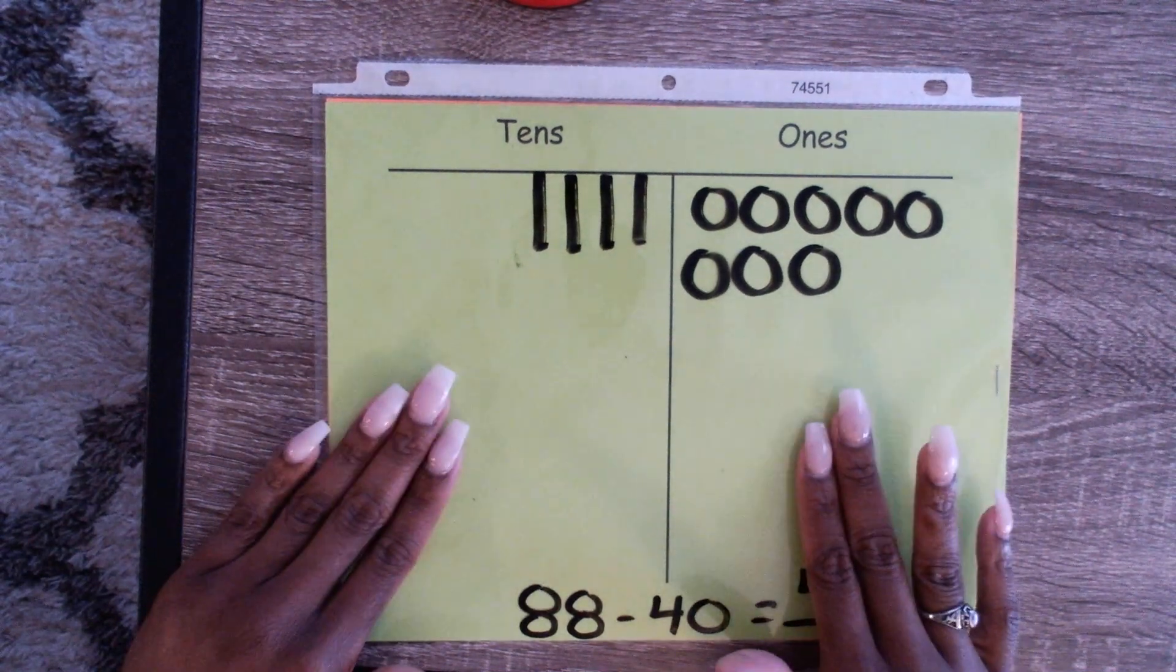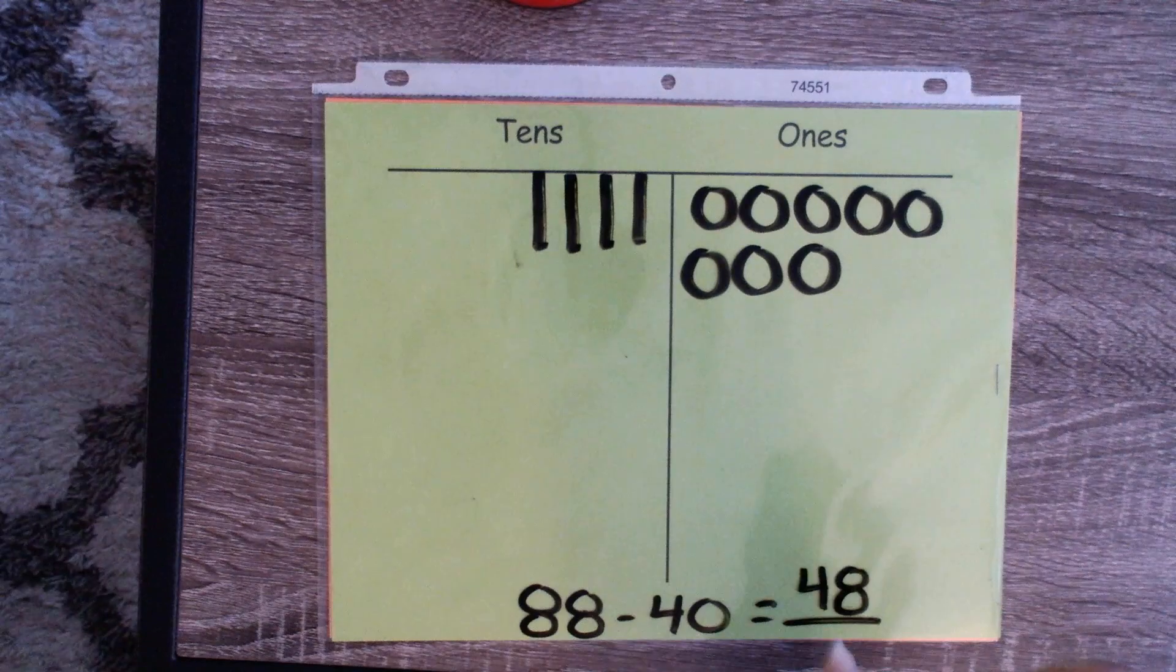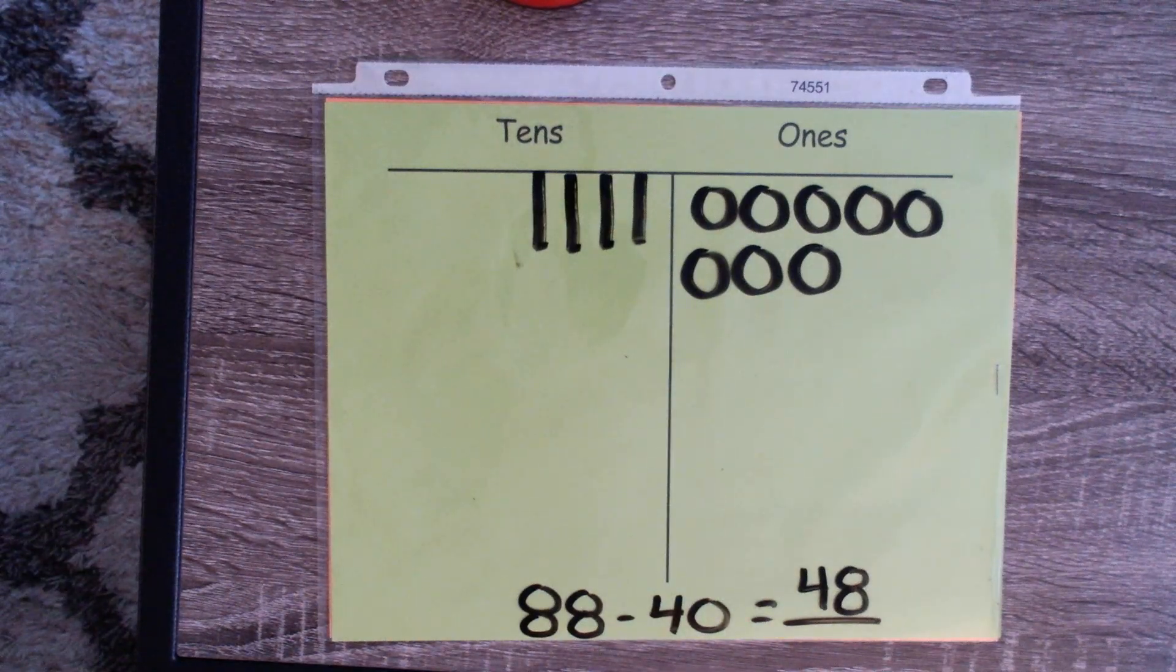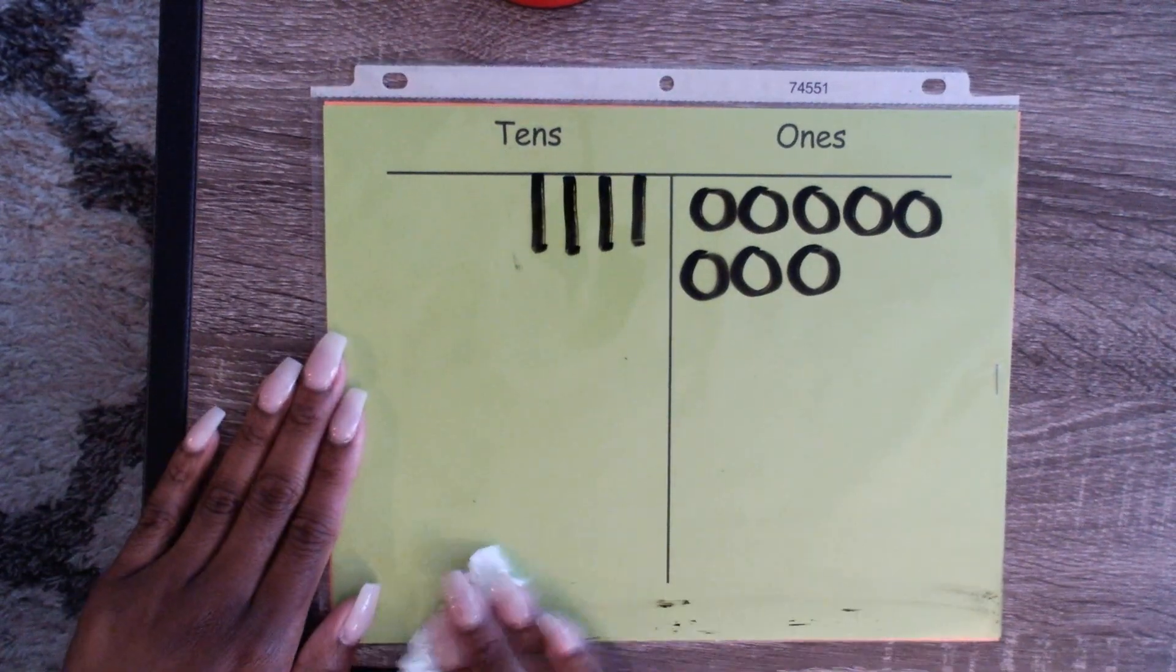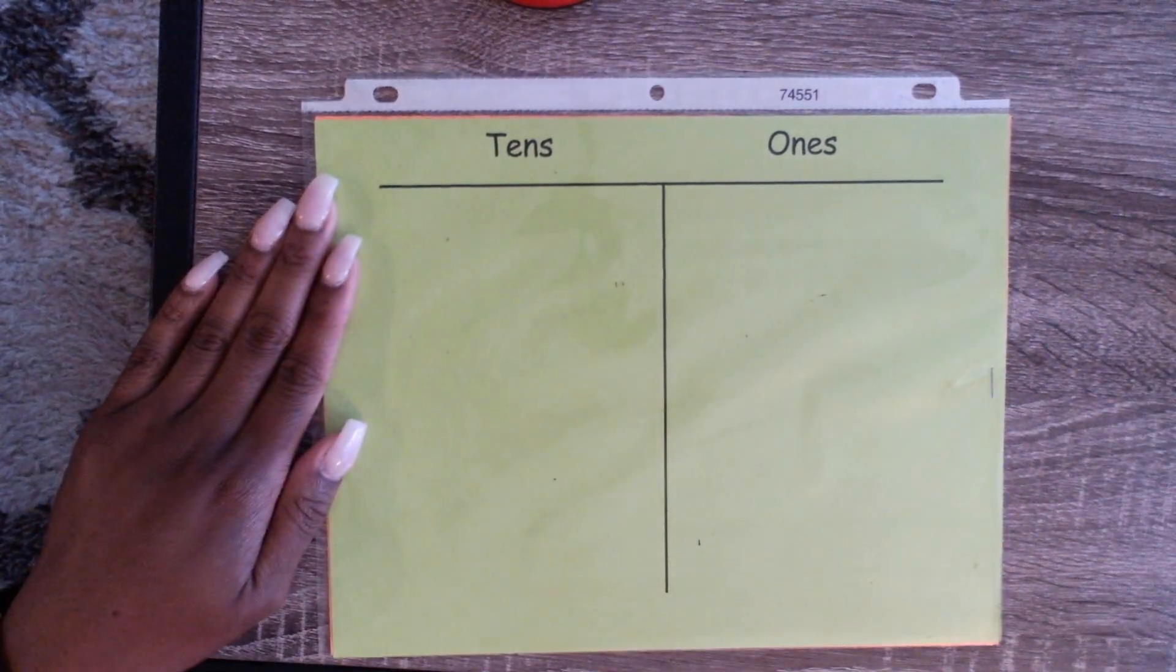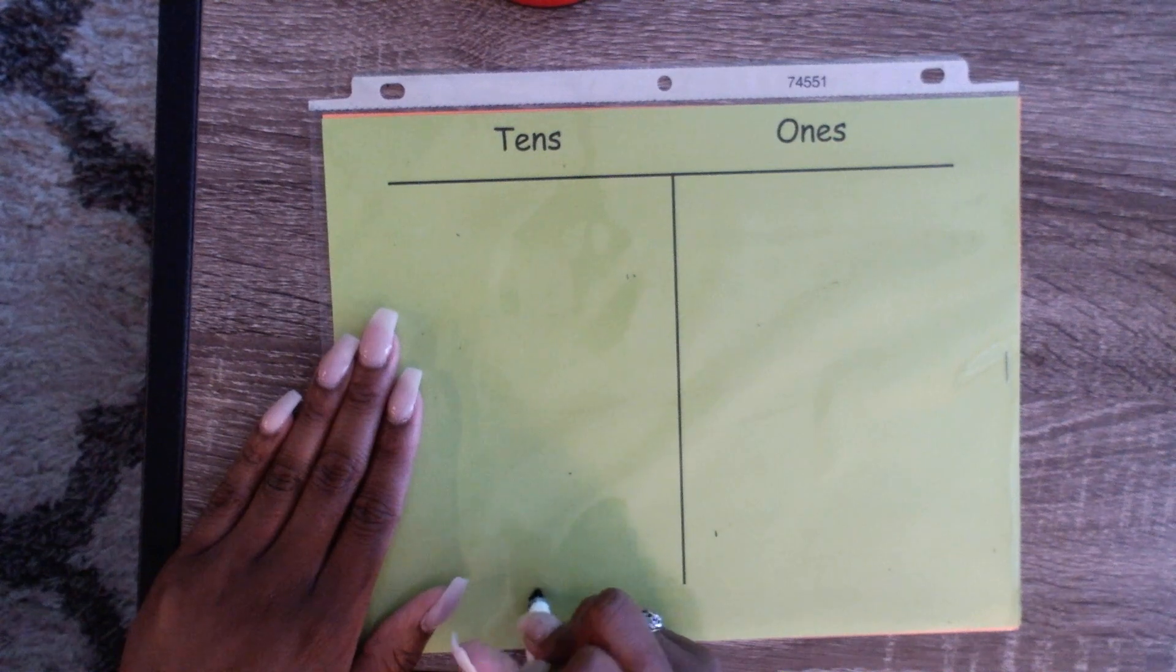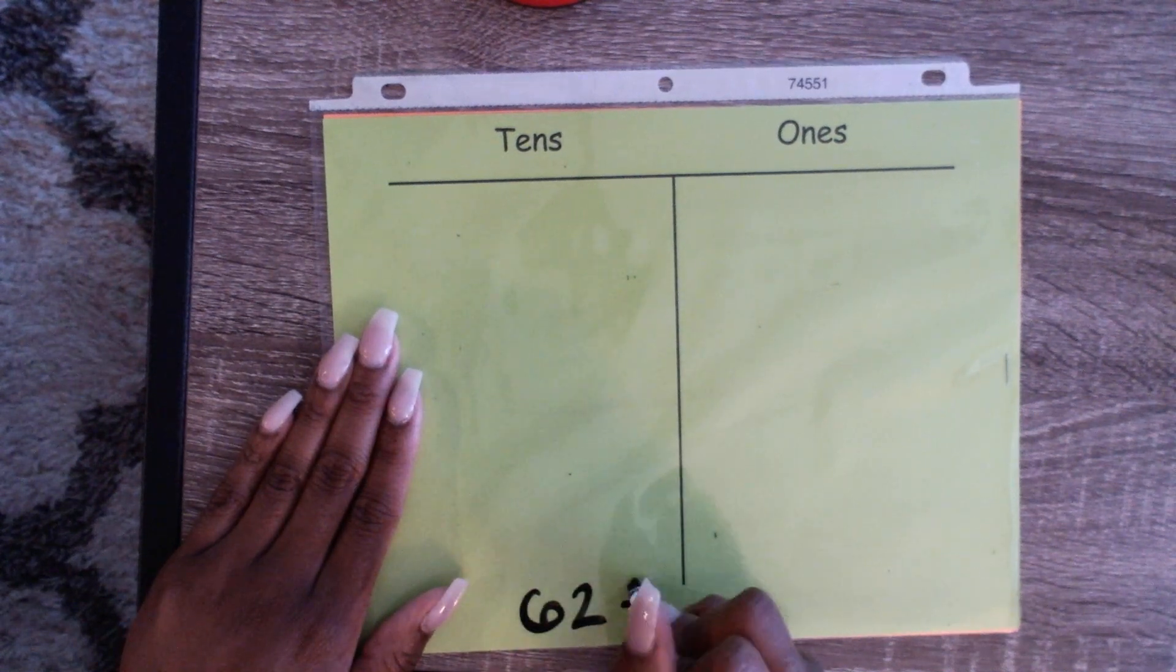Remember, this is a tens and ones chart. I'm going to show you a second strategy in a little bit. Now we're going to add. Let's clear our board.